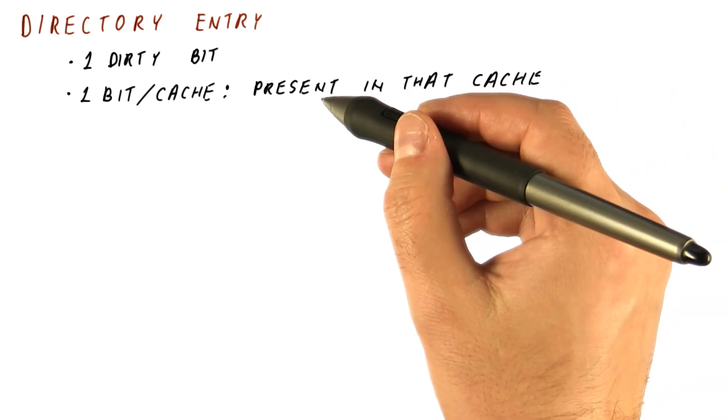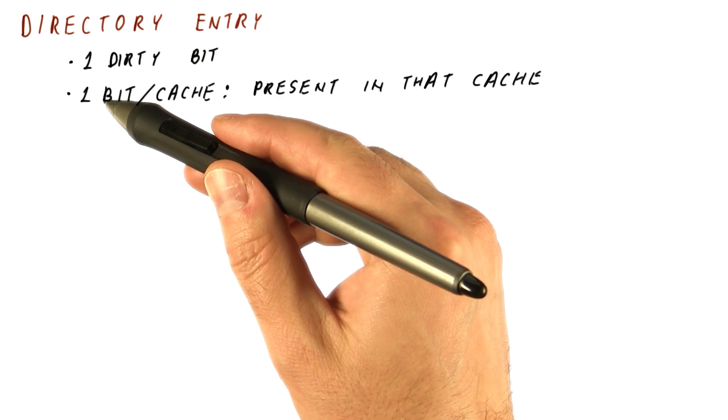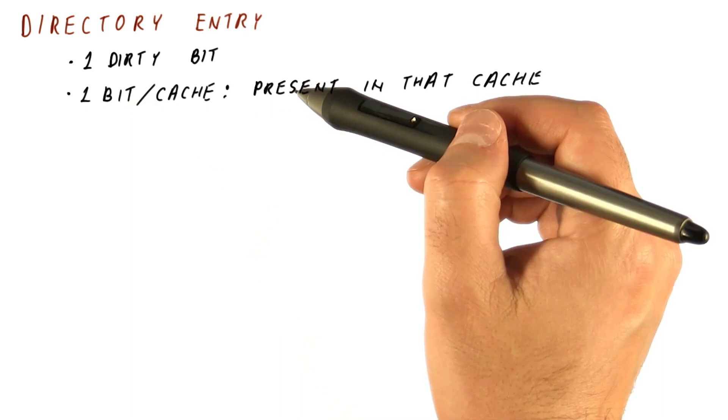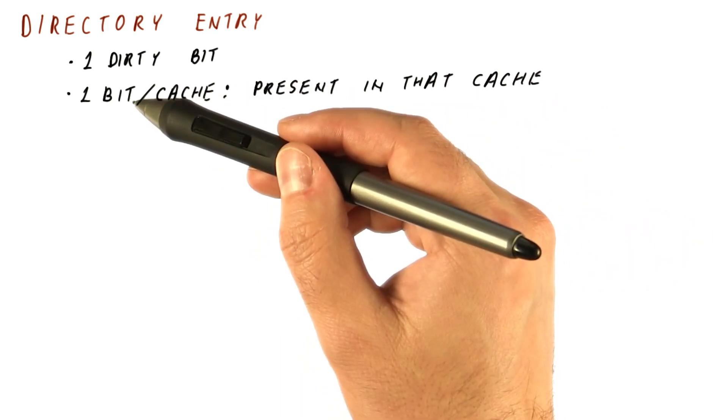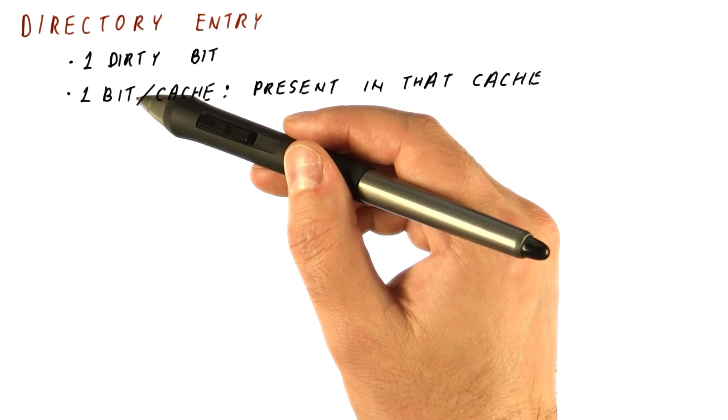If the presence bit is one for a particular cache, that means that we think that cache has a copy of the block. If the presence bit is zero, that means that we know for sure that that cache does not have the block in a state that is not I.